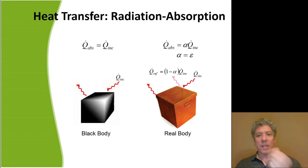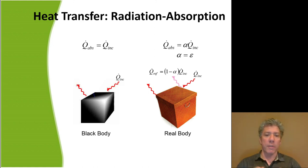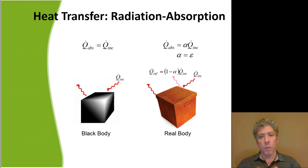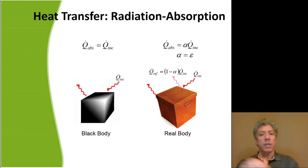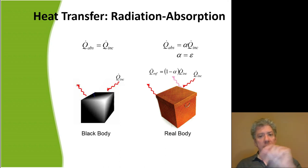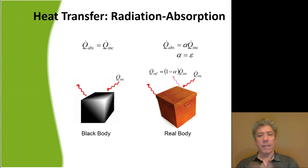Another interesting thing about a black body is that not only does it emit perfectly, it also absorbs perfectly. Any radiation, no matter the frequency, falling on a black body is completely absorbed — none of it is reflected. So Q-dot absorbed equals Q-dot incident. Real bodies actually absorb some of the incident radiation but reflect a portion as well. Many things look reflective when viewed in infrared — they look like a mirror because they're reflecting so much infrared radiation.